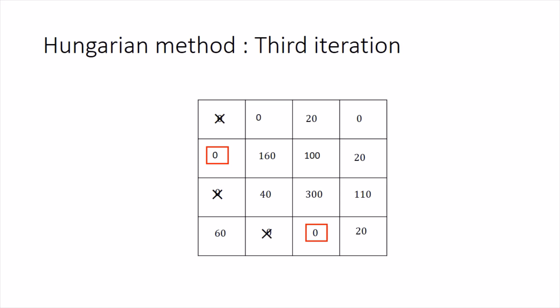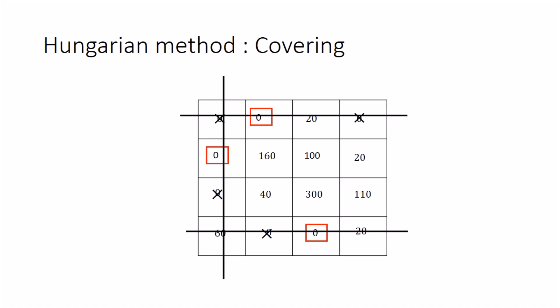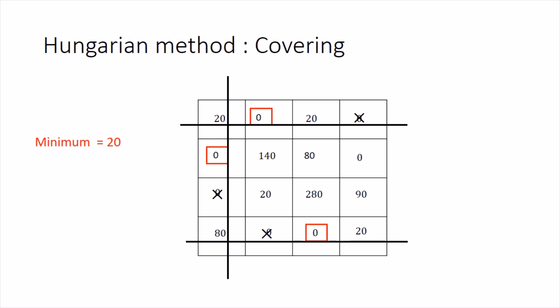In the second column we are left with one zero to cross and one to box. After the third iteration we still have only three boxed zeros, not four, so we cover all zeros with three lines again. The minimum of uncovered entries is 20 again. Subtract 20 from uncovered entries and add 20 to the entries at the two intersections: cells (1,1) and (4,1). This gives the updated matrix for the next iteration.